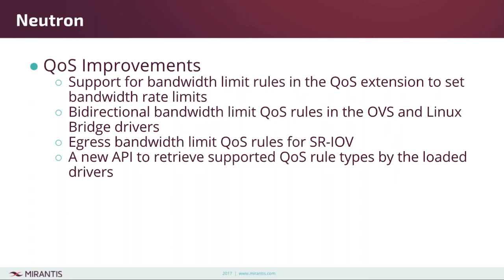The Quality of Service API now supports bandwidth rate limit rules. For example, you can set rules that limit upload and download bandwidth on a per-network basis or even on individual ports — say 10 megabits upload and 100 megabits download — and the Neutron agents will enforce that. Support for ingress and egress bandwidth limit rules was added to both the OVS and Linux bridge drivers, and egress bandwidth limit rule support was added to the SRIOV driver. There's also a new API that users can use to determine which rules are available based on whatever backends are loaded.